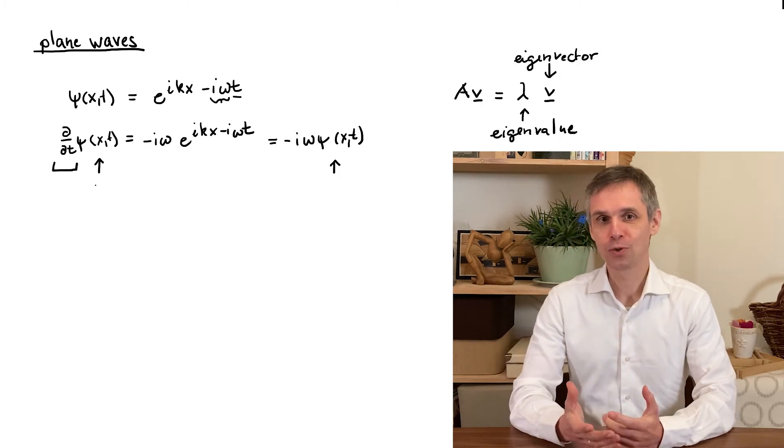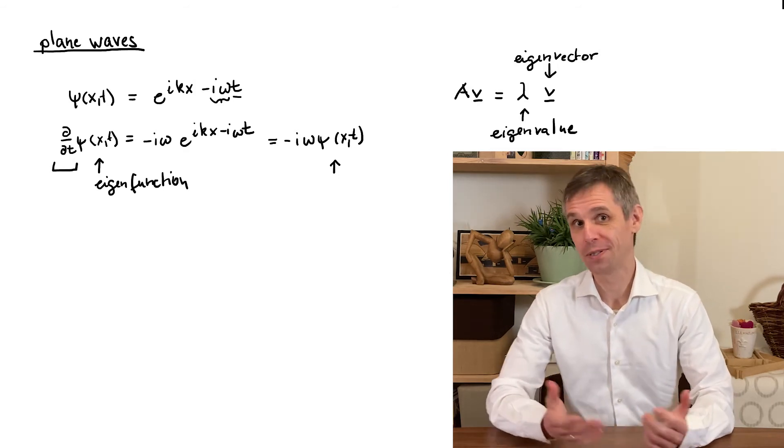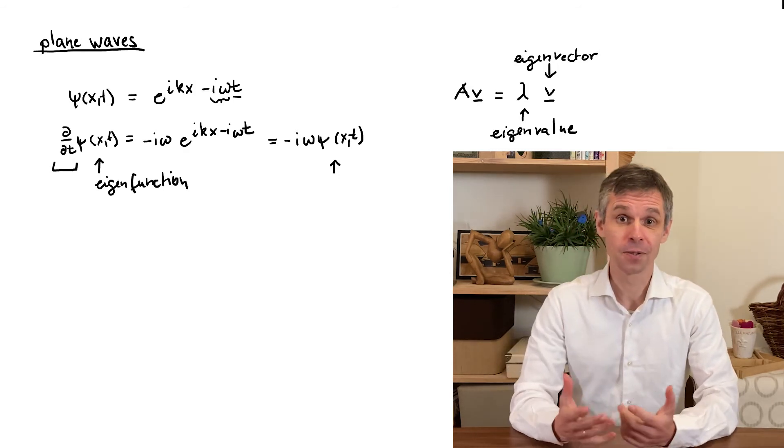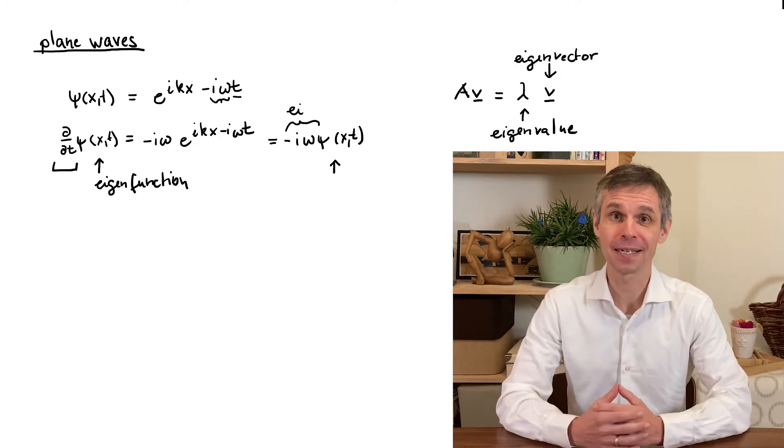In this case we are going to call the function an eigenfunction for this mathematical operation or this operator and the constant in front of this function we are still going to call the eigenvalue just as before.